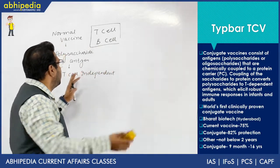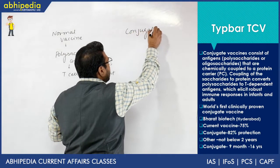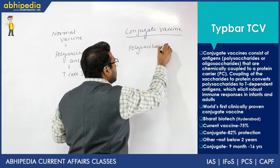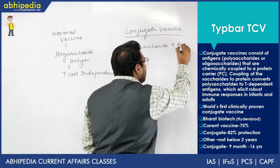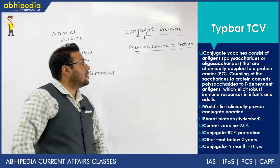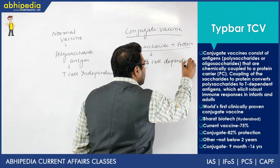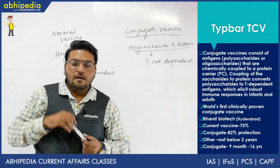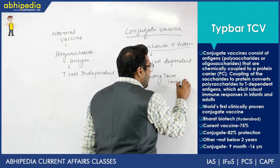Normal vaccines contain polysaccharide antigen. In a conjugate vaccine, however, polysaccharide antigen is combined with a protein layer — it is a combination of polysaccharide as well as protein. When both are combined, this leads to initiation of T cells. So conjugate vaccines are called T cell dependent. This is the key difference between a normal polysaccharide vaccine and a conjugate vaccine.